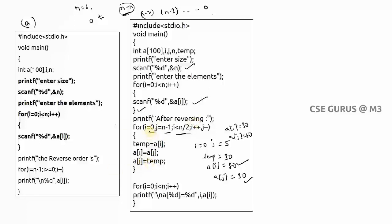After the first iteration, i becomes 1 and j becomes 4, so a[1] and a[4] are swapped next. This continues for n/2 swaps — it also works for odd-length arrays. After completing this process, when you print the array it will be in reverse order. This is the main difference: printing reverse order leaves the array unchanged, while reversing elements modifies the array itself.